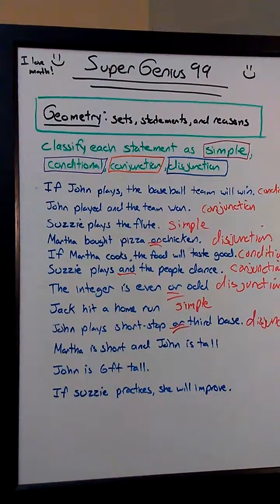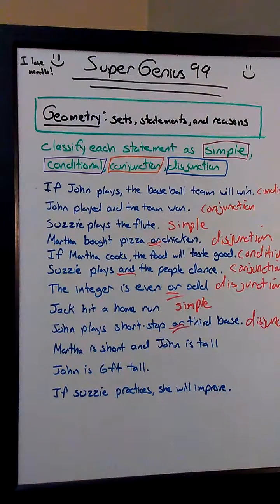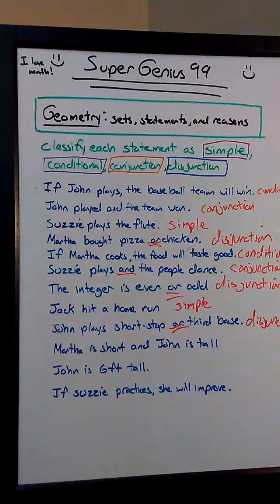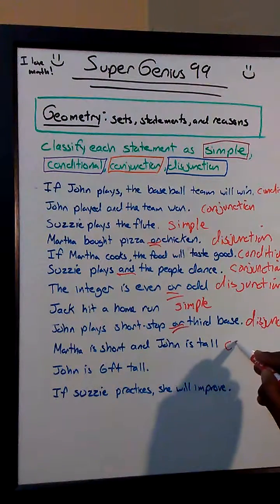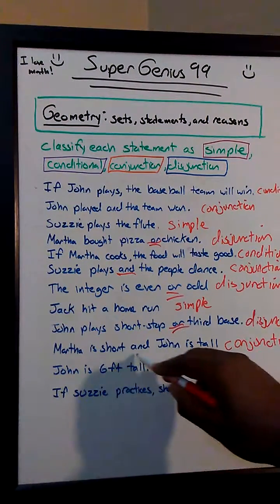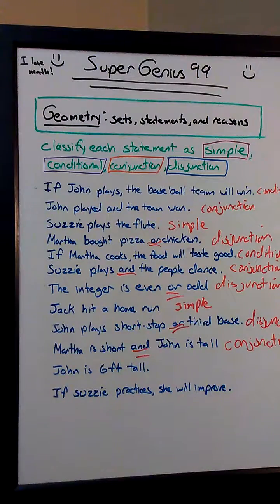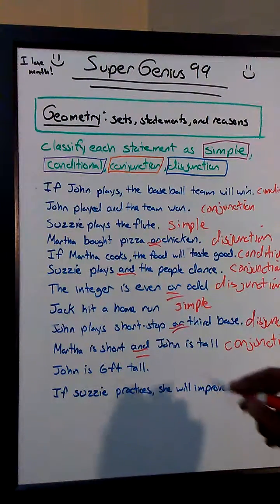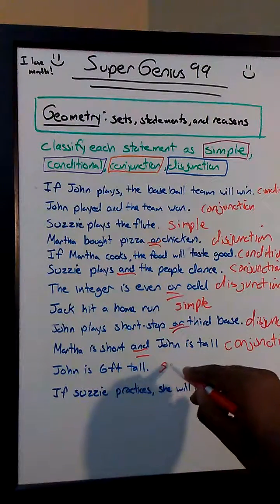Next: 'Martha is short and John is tall.' What kind of sentence is that? That is conjunction. What gives it away? 'And.' Okay, 'John is six feet tall.' Simple, conditional, conjunction, or disjunction? That is simple.